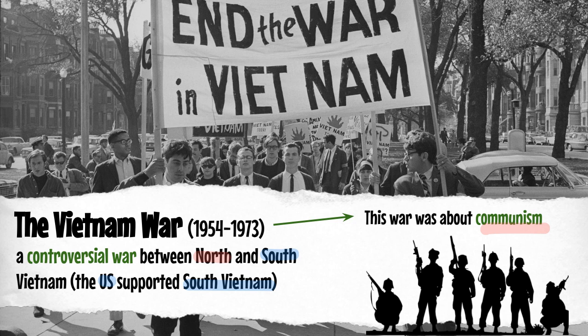Communism is a very different form of government than we use here in the United States. It is a form of government where there is no private property. The government is mostly in control of property, of resources, of wealth. And that looks very differently than what we do here in the United States — that's the core of what the argument is and what this war is really all about.